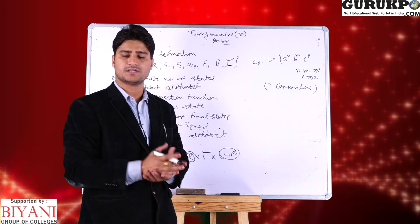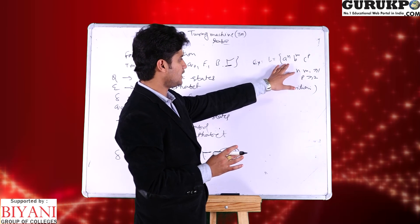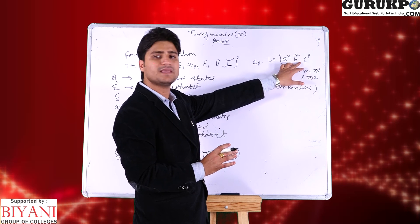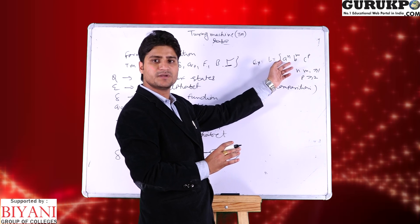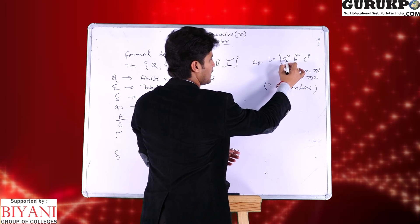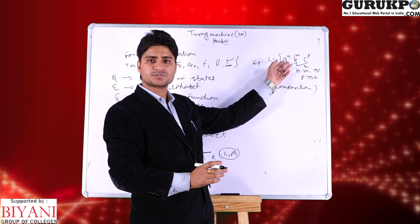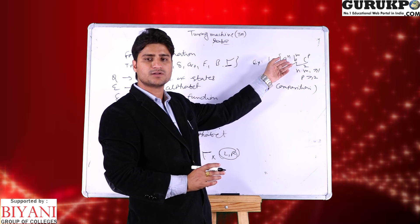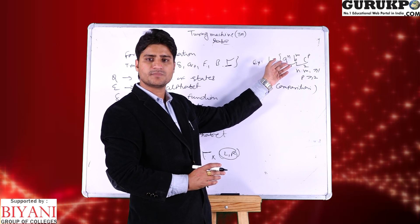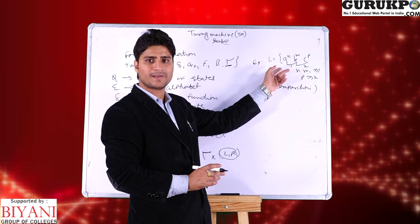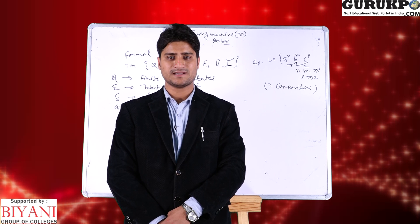The example of Turing machine is: A^N B^N C^P where N and M are greater than or equal to 1 and P is greater than 2. That means we have two comparisons in between the alphabets — one comparison and a second comparison. If you construct pushdown automata or other automata, we cannot construct it for this language. We can construct only a Turing machine if you have two comparisons — this is the main theme of the Turing machine. Thanks for watching this video, please like, comment and share.